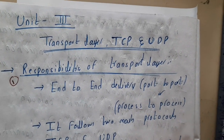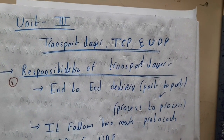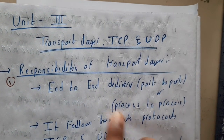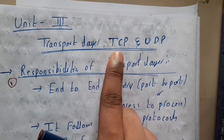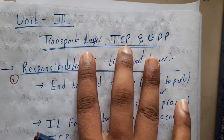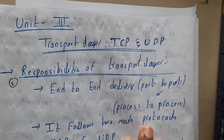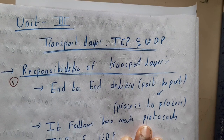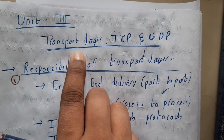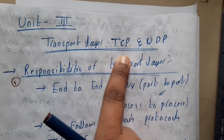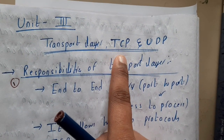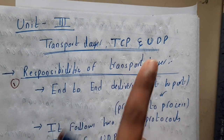We are back with our next series of lectures. We are going to start the third unit. The whole third unit consists of transport layer, TCP protocol, and UDP protocol. We'll be discussing these three topics in around 15 to 20 lectures. In the first two or three lectures we'll introduce the transport layer, then around 10 lectures on TCP, then we'll move on to UDP.